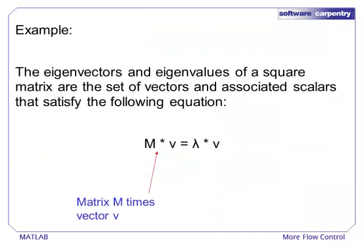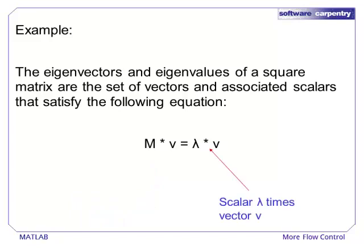As an example, consider the problem of computing eigenvectors. The eigenvectors of a matrix are the set of vectors that only change by a scalar under matrix multiplication. The scalar multiplier is called an eigenvalue, and eigenpairs form a key theoretical concept that is used in many fields.